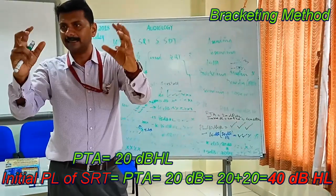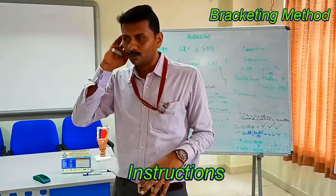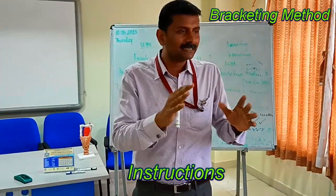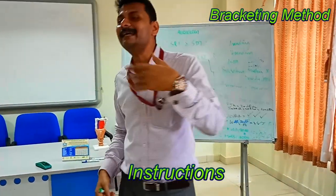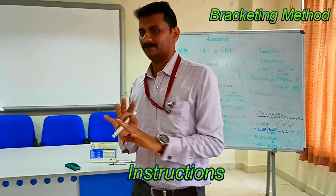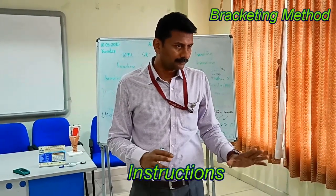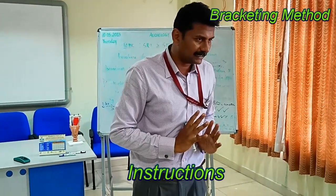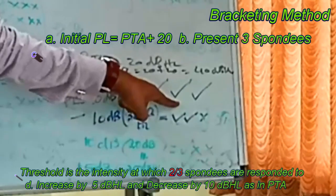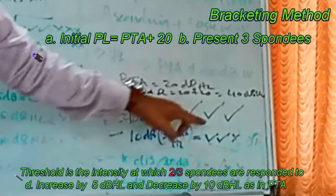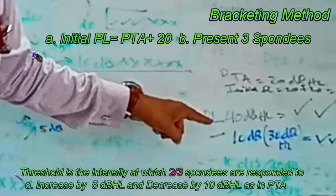If PTA is 20 dB, the initial presentation level is 20 plus 20, which is 40 dB HL. We fit the headphones and give the instruction: 'I am going to present paired words to one ear then the other. You have to repeat them back — whether you think it's correct or wrong, repeat it. If you think you heard something, guess it.' Three spondees are then presented at this initial level.